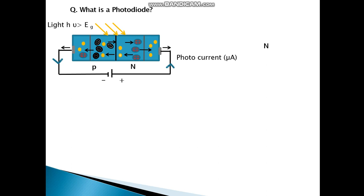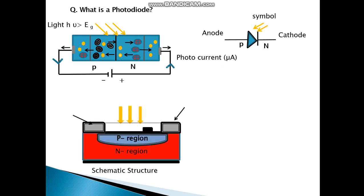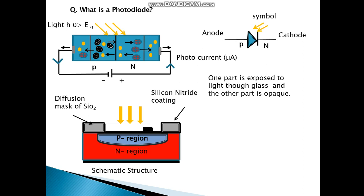Now let's see what's a photodiode. As the name suggests, photo means light. When light is incident on the pN junction, there is a current. This is a symbol, the light enters as you can see the arrows on the top. That's the schematic structure. The diffusion mask of SiO2 is near the P region, silicon nitride coating. One part is exposed to light to the glass and the other part is opaque.